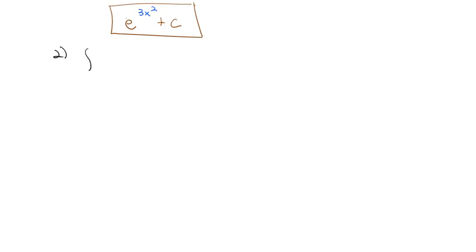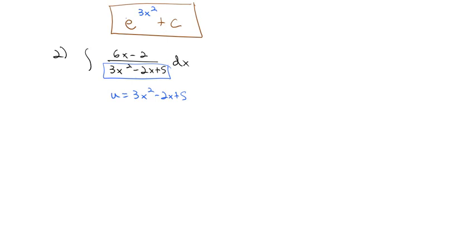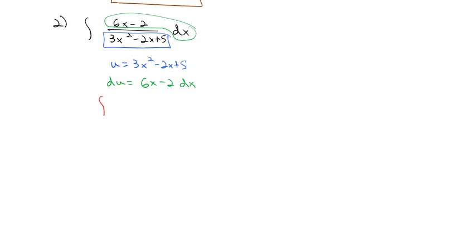Let's try another example. We'll try the integral of 6x minus 2 over 3x squared minus 2x plus 5 dx. We're looking for something where its derivative is multiplied into the problem. Notice if I take the entire denominator, 3x squared minus 2x plus 5, as my u, then du becomes 6x minus 2 times dx — and notice that is all multiplied in on the top. So we rewrite this as the integral where the 6x minus 2 dx all becomes du, leaving behind 1 over u.